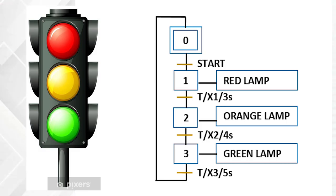In this tutorial, I want to show you how to create a sequential program in Siemens TIA Portal. We will use a traffic light as an example.